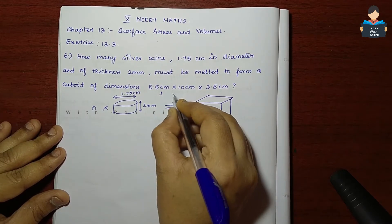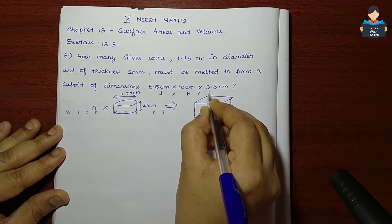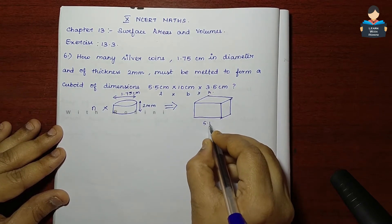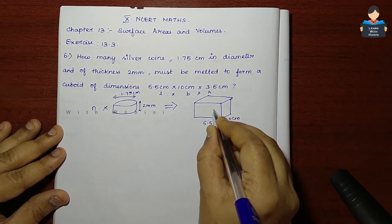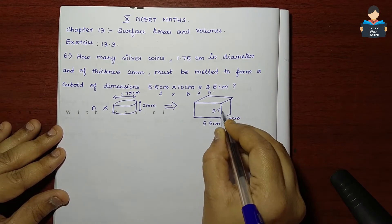A cuboid of L into B into H, where L is 5.5 cm, breadth is 10 cm, and height is 3.5 cm.